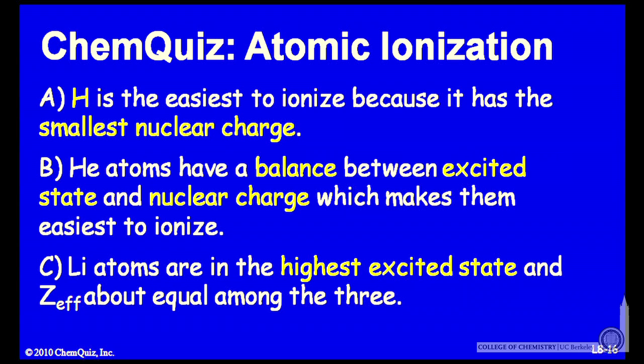Let's look at an argument for each of the possible answers. A, hydrogen is the easiest to ionize because it has the smallest nuclear charge. Or B, helium atoms have a balance between excited state and nuclear charge, which makes them the easiest to ionize.